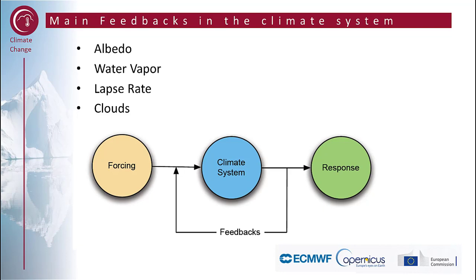When we talk about feedbacks, we start with a forcing that has an impact on the climate system. The forcing here is often higher greenhouse gas emissions. These result in warming of the climate system and there's a certain response. Sometimes there's a feedback. Feedbacks can both be positive, resulting in more warming, and they can be negative, resulting in cooling.